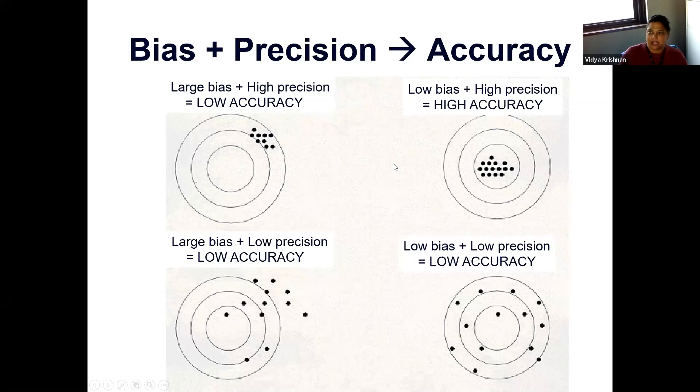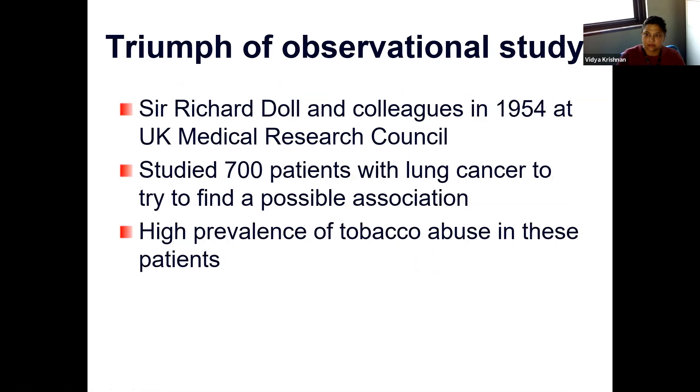Whereas if you have low bias and high precision, that gives you the best amount of accuracy. You can have a representation of the real truth. So we're looking to conduct studies that minimize bias and have high precision.